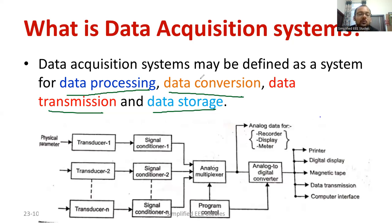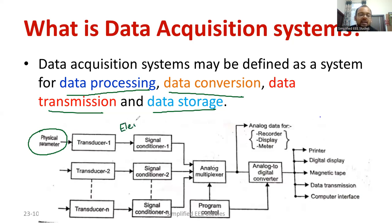Let us have a brief overview of the block diagram of data acquisition system, starting from the extreme left side. We have the physical signal — it may be force, temperature, displacement, or whatever it may be. Using the transducer, the physical signal will be converted into an electrical signal. The output of the transducer, the electrical signal, may be too weak, so certain amplification can be given using the signal conditioning device, providing strength to the electrical signal produced by the transducer.